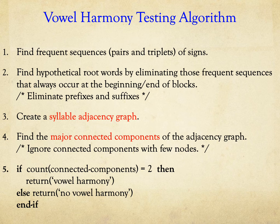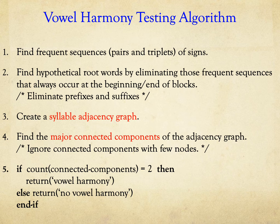Our vowel-harmony testing algorithm consists of five steps. First, we find frequent pairs and triplets of signs. Second, we find hypothetical root words by eliminating those frequent sequences that always occur at the beginning or the end of blocks. Third, we create a syllable adjacency graph for the root words. Fourth, we find the major connected components of the syllable adjacency graph. Fifth, if the number of major connected components is two, then we return the answer that the inscription has vowel harmony.